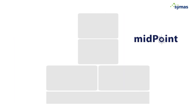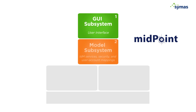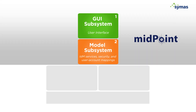In terms of construction, Midpoint has a very well-defined architectural structure. There are five subsystems. These five components are used to build the web application archive deployed inside of a Java runtime environment. At the top we have the GUI subsystem — that is number one. That sits on top of the model, which is where the services, security, and user account mappings reside. Those two subsystems, one and two, are the high-level components of Midpoint, and they are highly customizable.